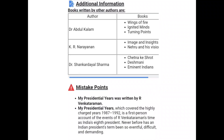The book 'A Presidential Odyssey' by R. Venkataraman covered the highly charged years from 1987 to 1992, and is a first-person account of events during R. Venkataraman's time as India's 8th President.